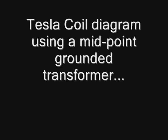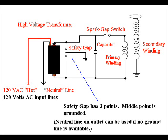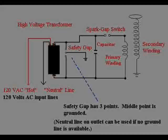In the last section, let's look at a diagram using a midpoint grounded neon transformer. The Tesla coil works with the same principles, but the wiring is a little different. In this case, there are two high voltage output terminals from the transformer, so the primary winding of the Tesla coil will be connected across both terminals instead of one end being grounded. As before, the spark gap switch goes in series with the primary winding, and the capacitor is connected in parallel with the transformer before the spark gap switch. The other difference is that the safety gap will have three points — the outer two connected to the transformer terminals and the middle point grounded. Have fun, be safe, and hopefully this helps you get the sparks flying.